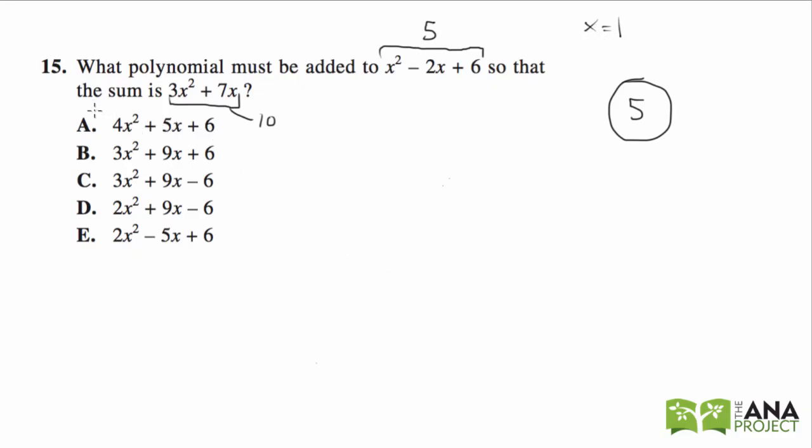Go through all the answer choices, because chances are with simple numbers you could have multiple answer choices that give the same result, and then you'd have to go back and use a whole new set of numbers. You could use less common numbers like x equals 9, but the downside is the calculations become harder.